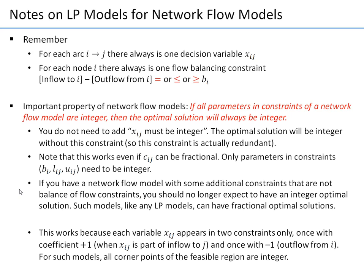The reason this works is that each variable xij appears exactly twice in the model: once with coefficient plus one and once with coefficient minus one. For such models it has been proven that all corner points of the feasible region are integer. So for a network flow model with 10 nodes and 20 arcs, all corner points of the 20-dimensional feasible region are integer points, and whatever the objective, you'll always find an integer solution. The following presentation will show examples of network flow problems with LP formulations solved in Excel.